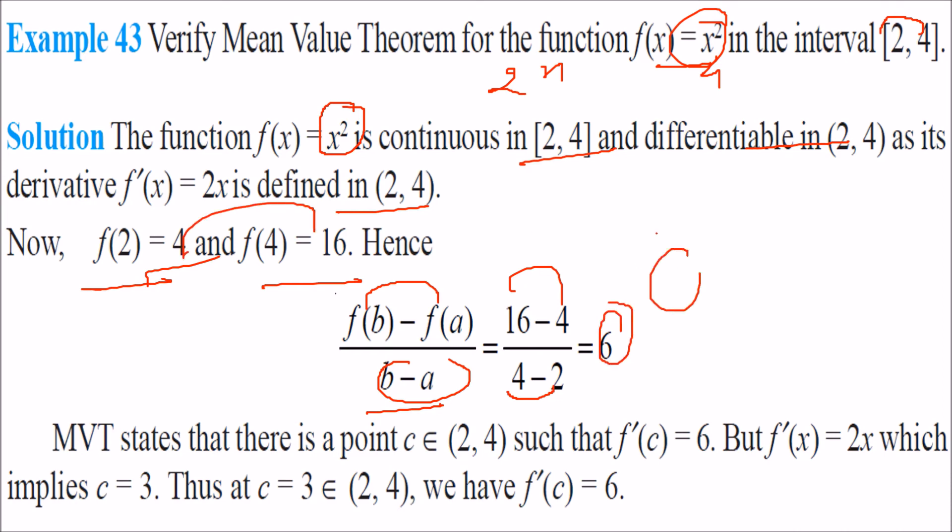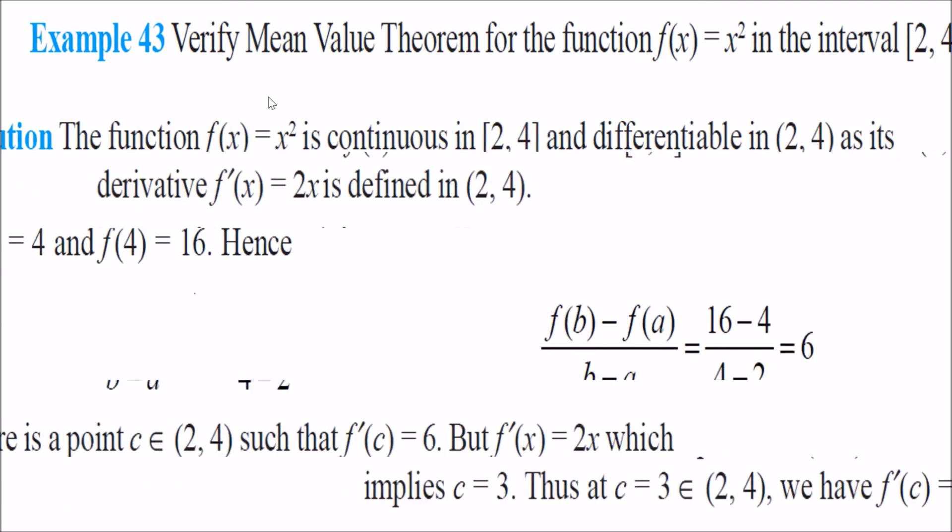What MVT states that there is a point c which is lying between 2, 4 such that f dash c equal to 6. So what is f dash x? 2x. 2x equal to 6. For 2c equal to 6. What is c? It will be 3.